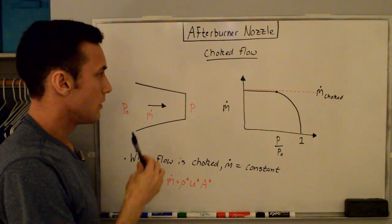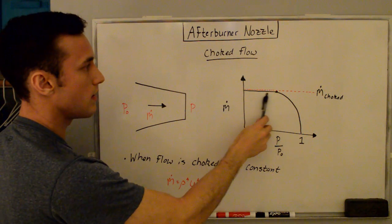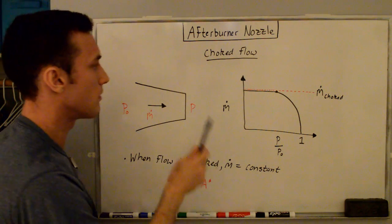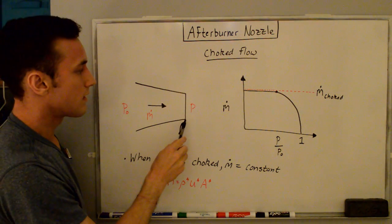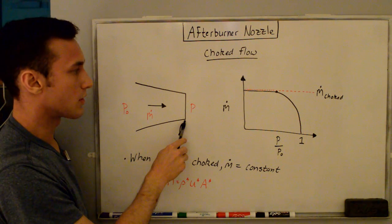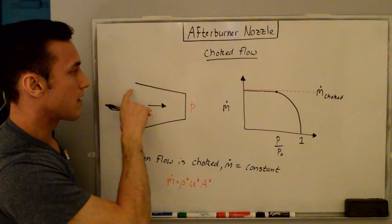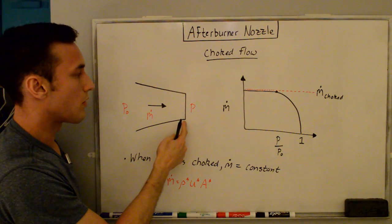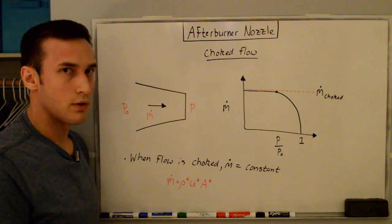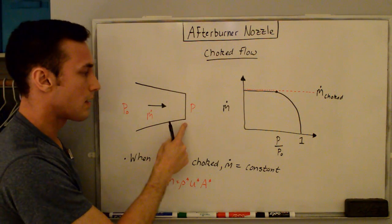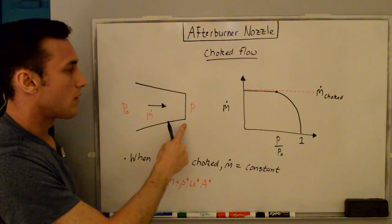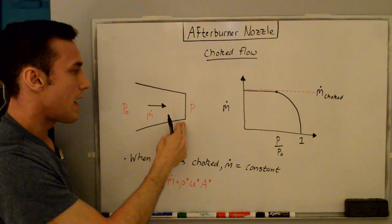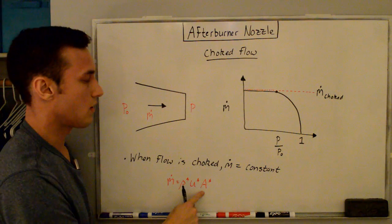When the flow is choked, the mass flow rate M-dot equals a constant. In a converging nozzle, you get sonic flow right at the nozzle throat — Mach number equals one — and you will never get supersonic flow. At this choked condition, we define a convenient star state where M = 1, with density ρ*, velocity U*, and area A*. We can then solve for the mass flow rate using these star quantities.